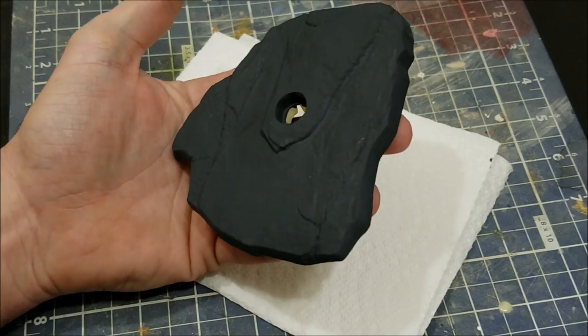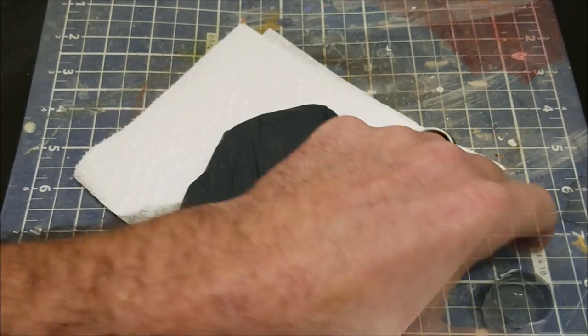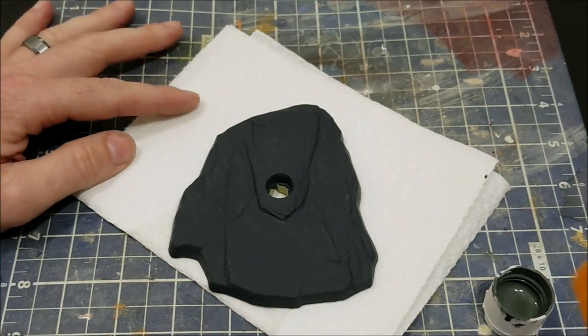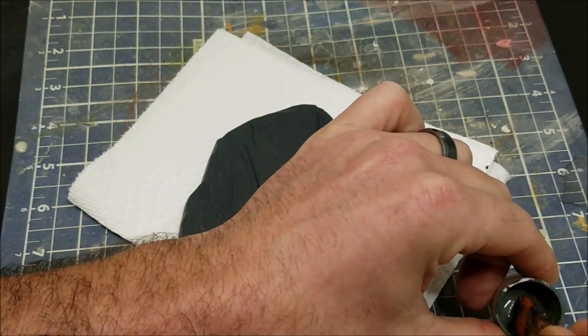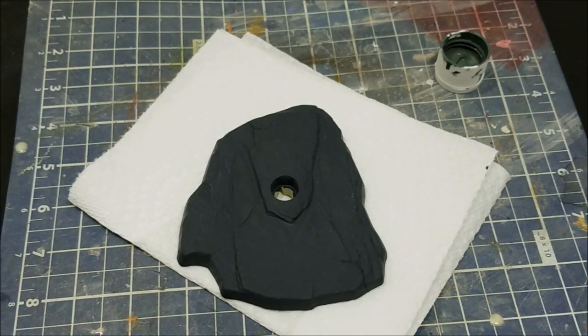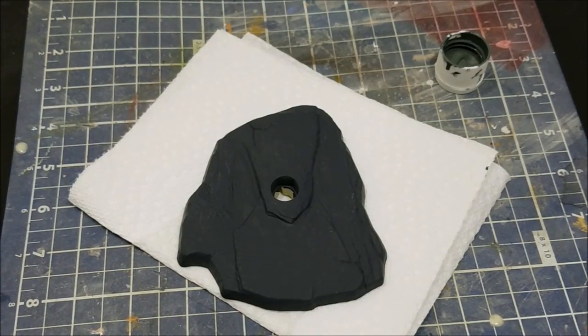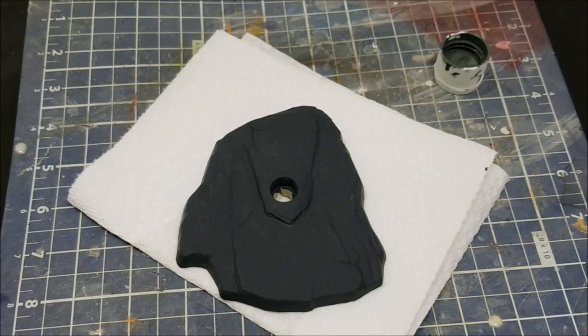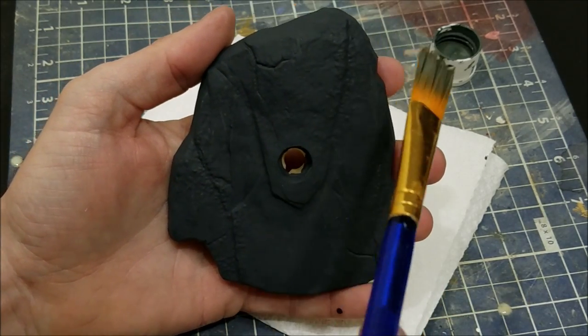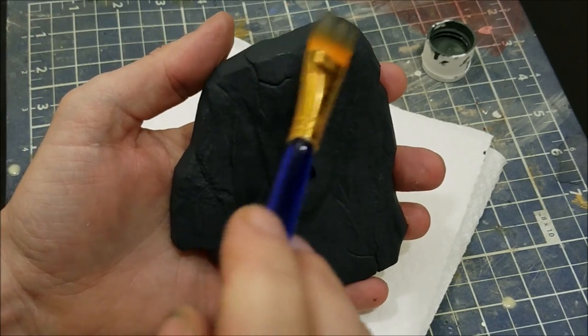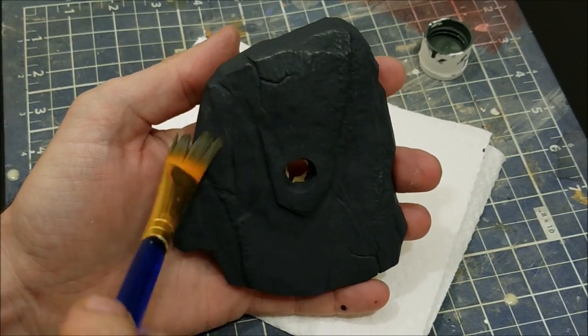Now it's time to move on to that second gray, the hippo gray. Get a nice fat dry brush because we're going to be dry brushing this thing. Dip the brush into the paint and wipe off most of it, then do a nice heavy-handed dry brush all over the base, making sure all the little edges, cracks, and details really start to pop.